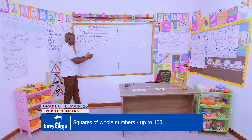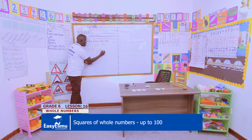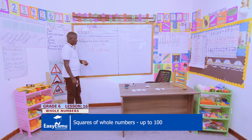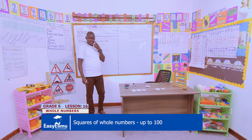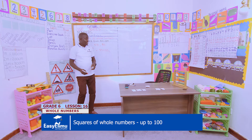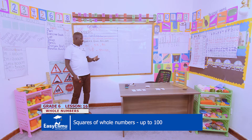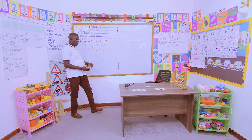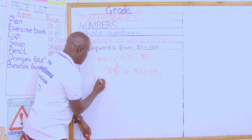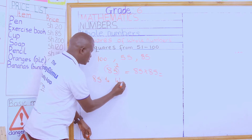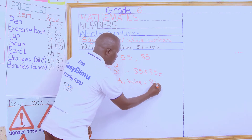When you are looking at the square of 85, it means 85 multiplied by itself — that is 85 multiplied by 85. How do we go about this? It is very easy. First, take 85 and expand it to its total value. When we break 85, it becomes 80 plus 5.